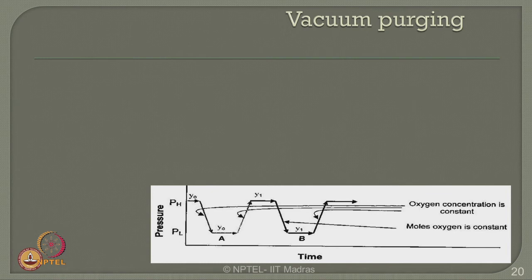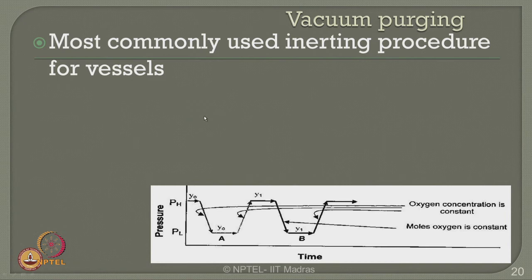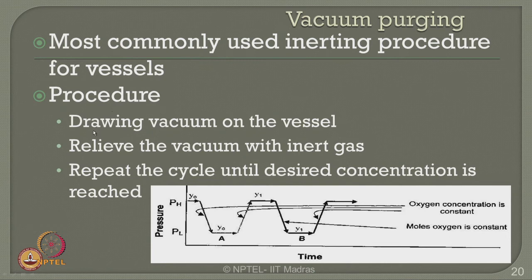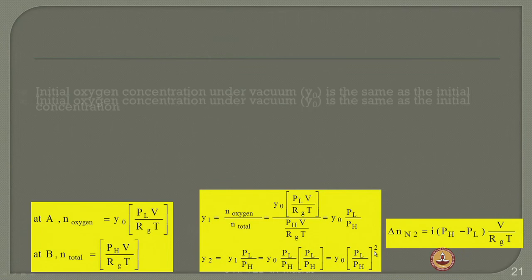The pressure needs to be dropped from a high value to a lower desired value for the specific range. While dropping or increasing pressure, the oxygen concentration is maintained and the mole oxygen content also remains constant. Therefore, the concentration changes from Y naught to Y1 to Y2 as the number of cycles changes from A to B and C as time progresses. The initial oxygen concentration under vacuum, Y naught, is the same as the initial concentration in the fuel.